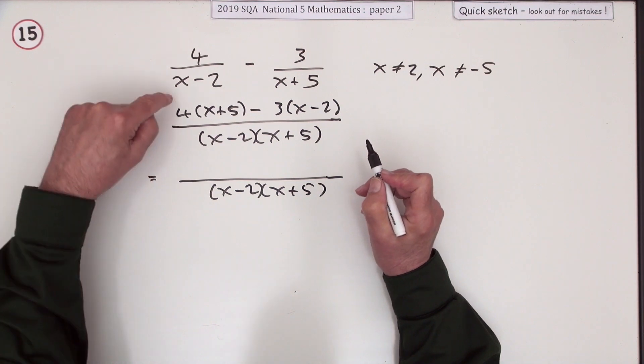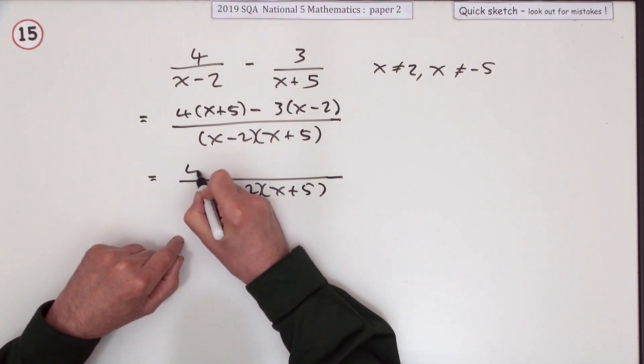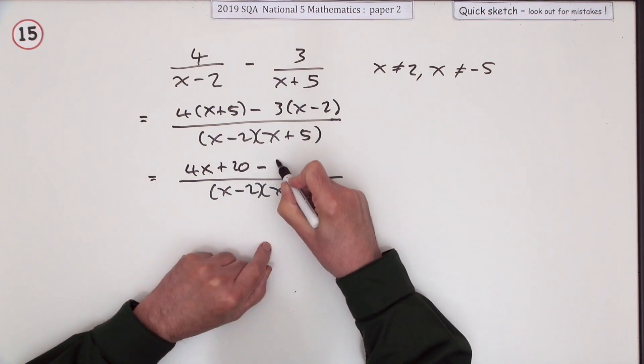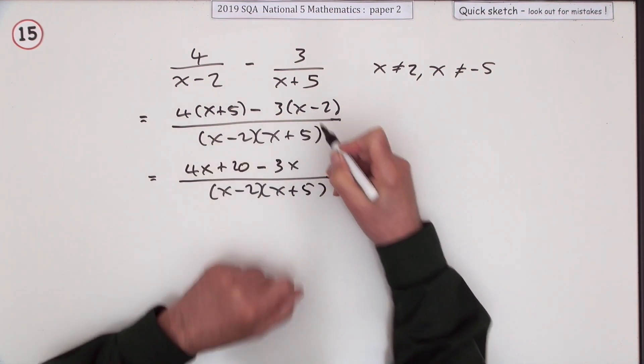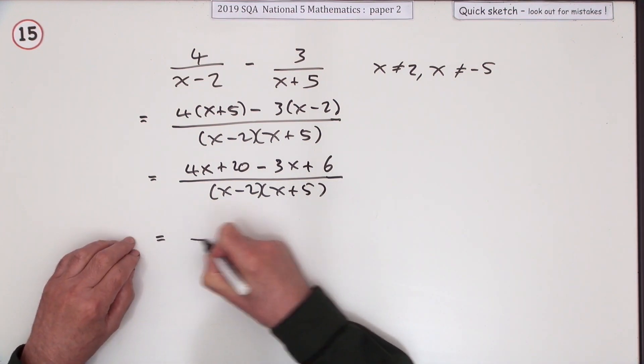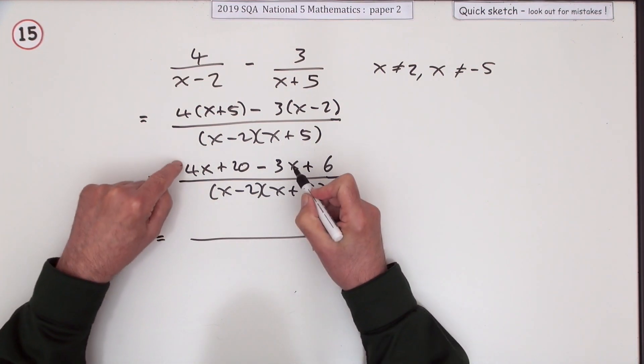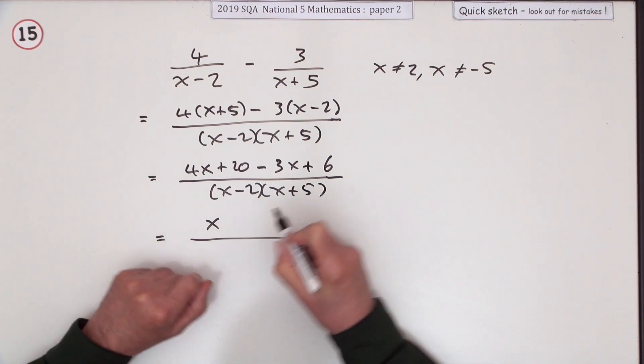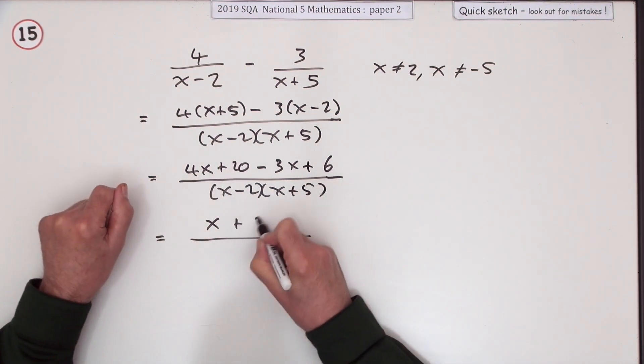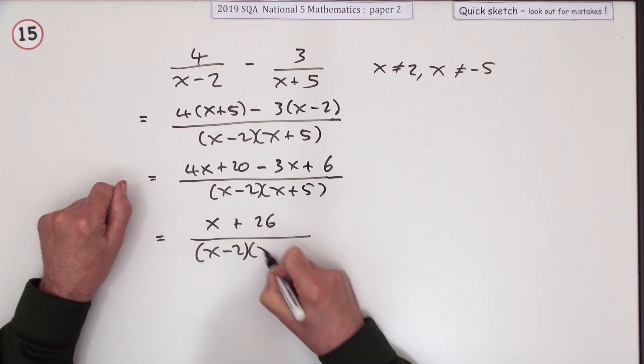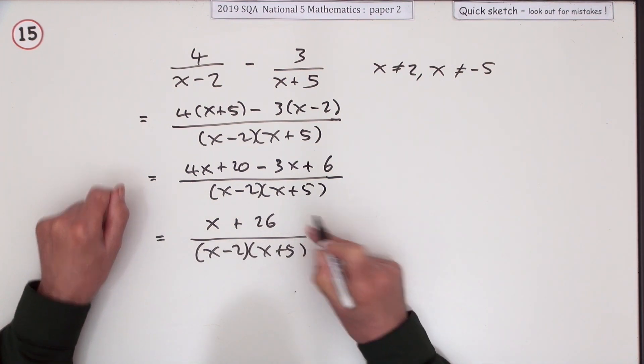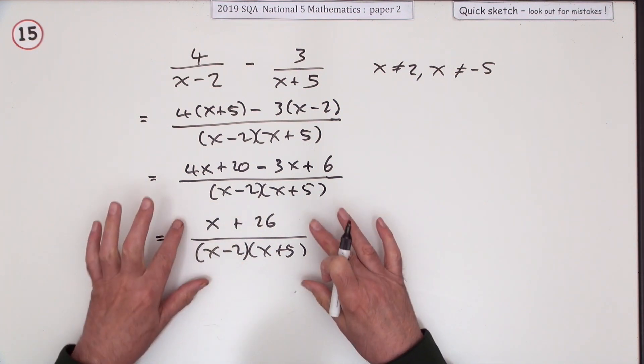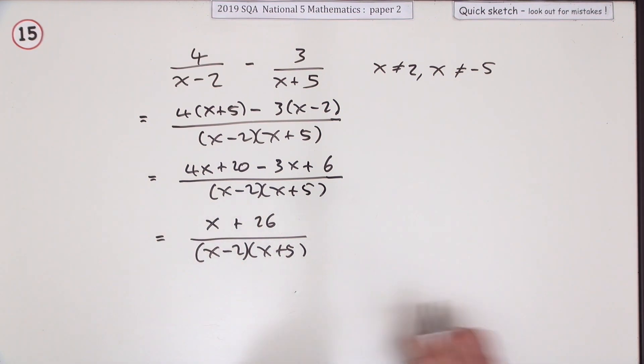Now you've got to sort out the numerator. 4 times this: 4X plus 20. Minus 3 times that: 3X, watch negative negative, plus 6. So what happens on top? 4X take away 3X is a single X. Still hope for a cancellation - not now. Plus 26. Despite the fact that that won't cancel out either of those, it's neater to leave it in this factorized form.